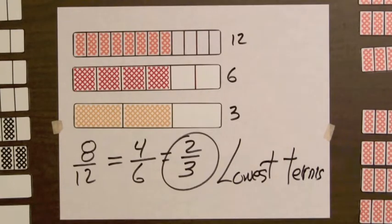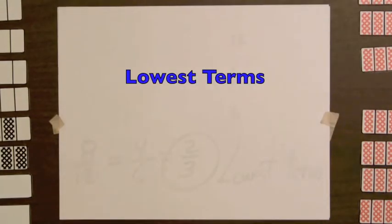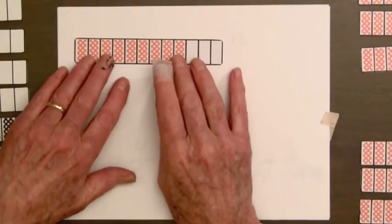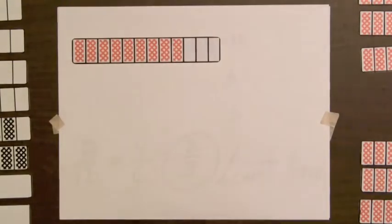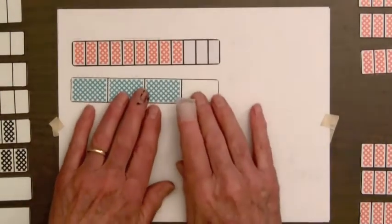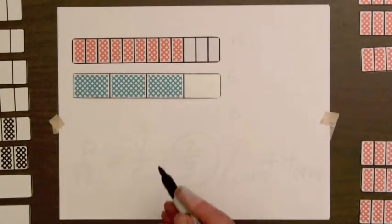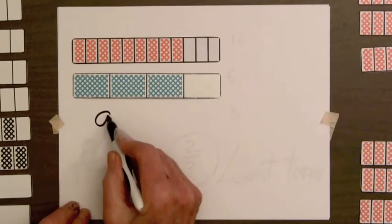Let's look at another example. This time we'll use the bar for nine-twelfths and three-fourths. Now, once again, these bars have the same shaded amount, so their fractions are equal.